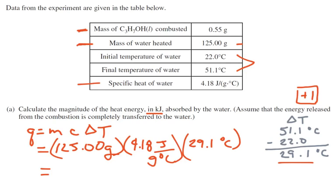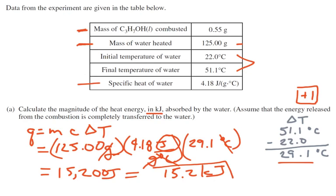So here I have my calculation. I'm going to go ahead and do it. I get 15,200 joules, because grams drop out, degrees drop out, and left with joules. But it asks for kilojoules, so we're going to move the decimal point over and make that 15.2 kilojoules. That's my first piece of this problem, and that's worth one point.